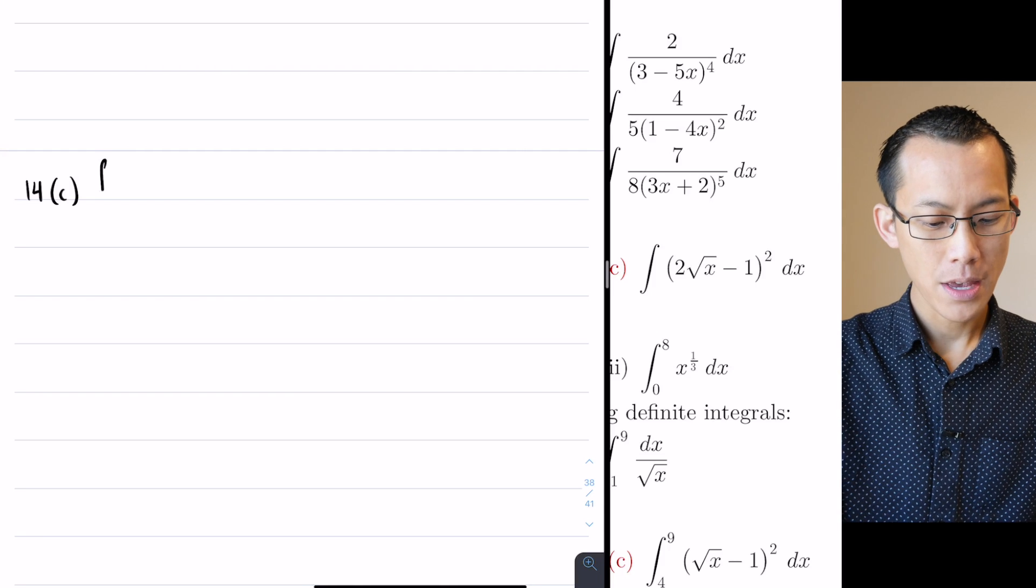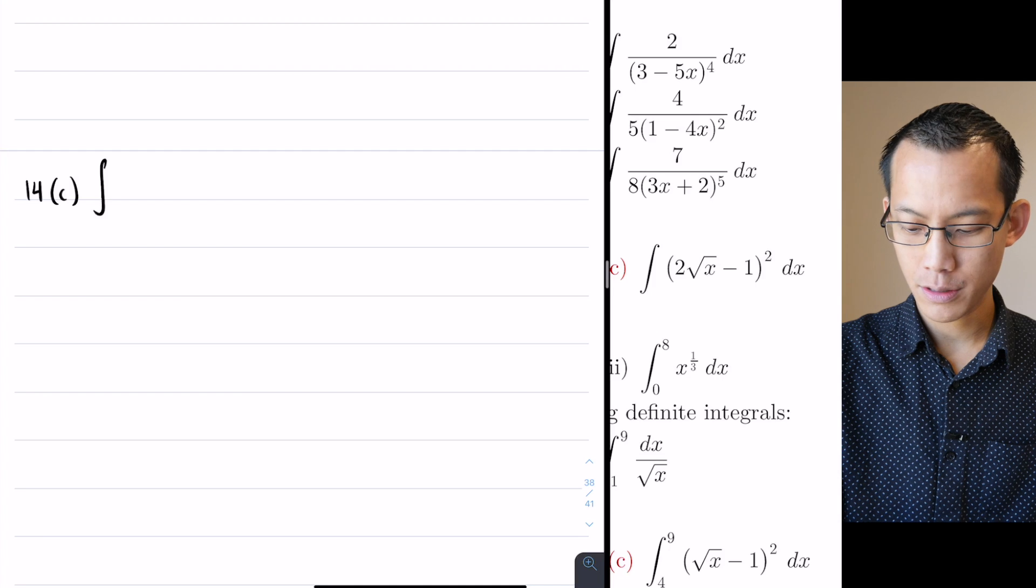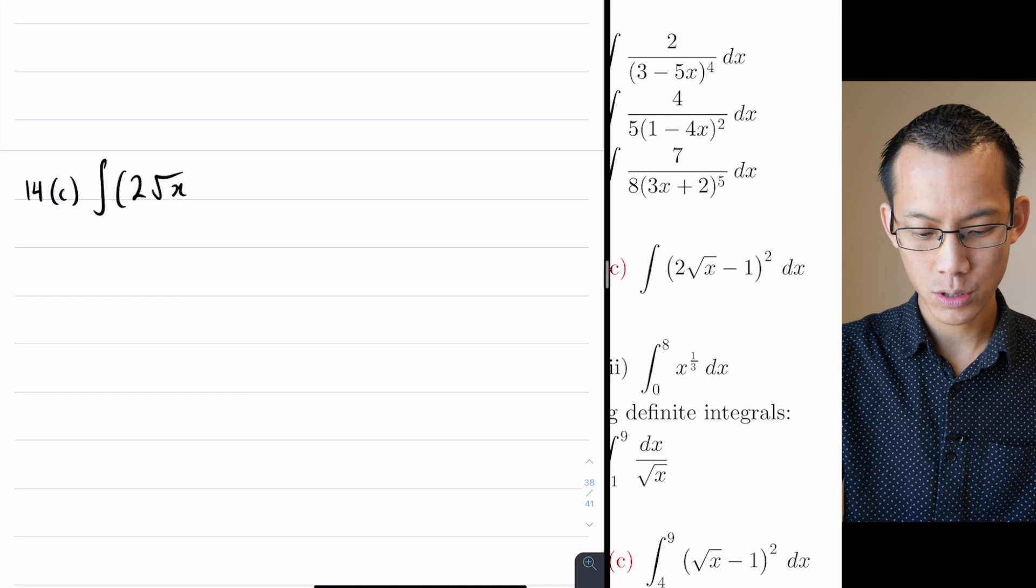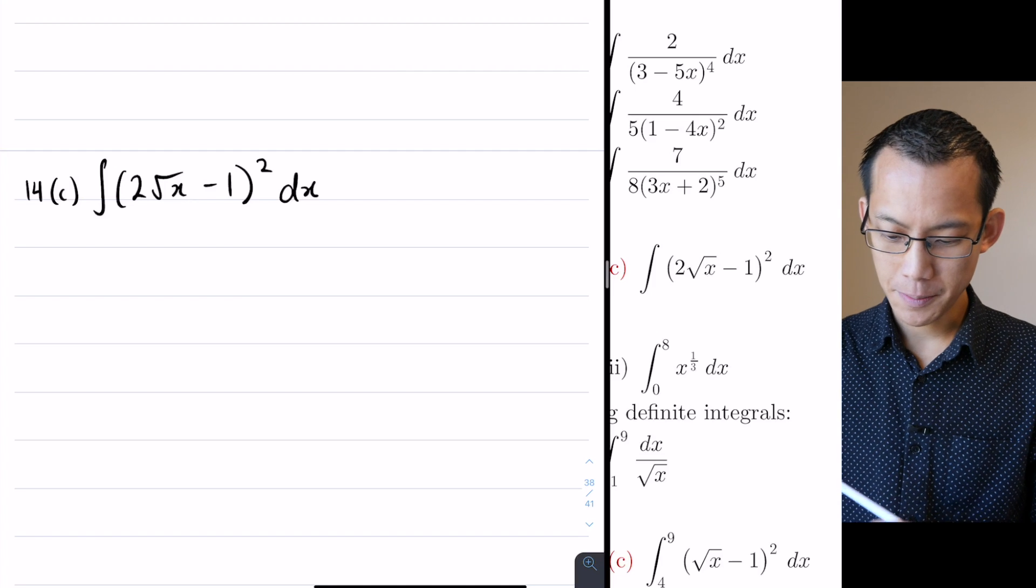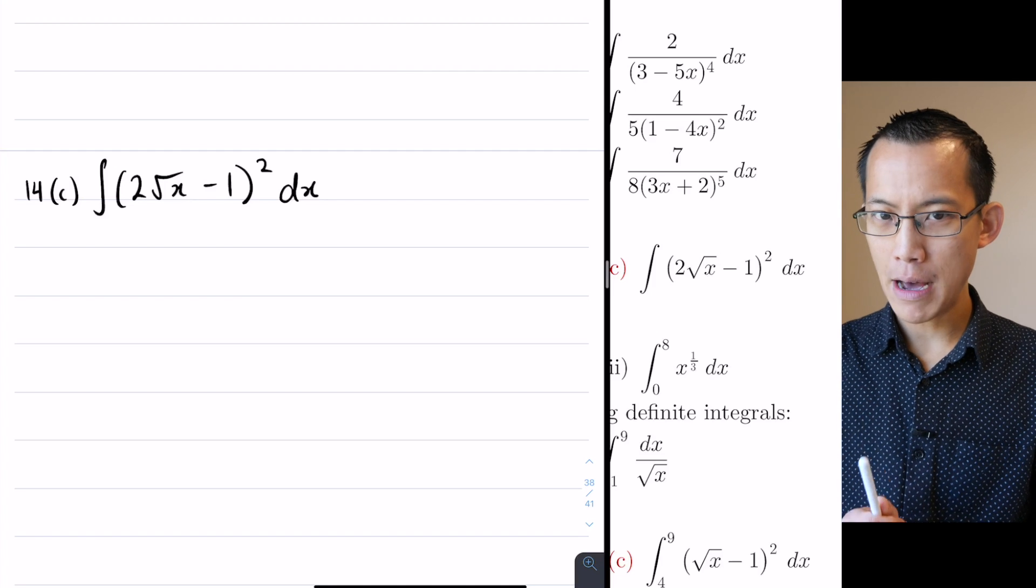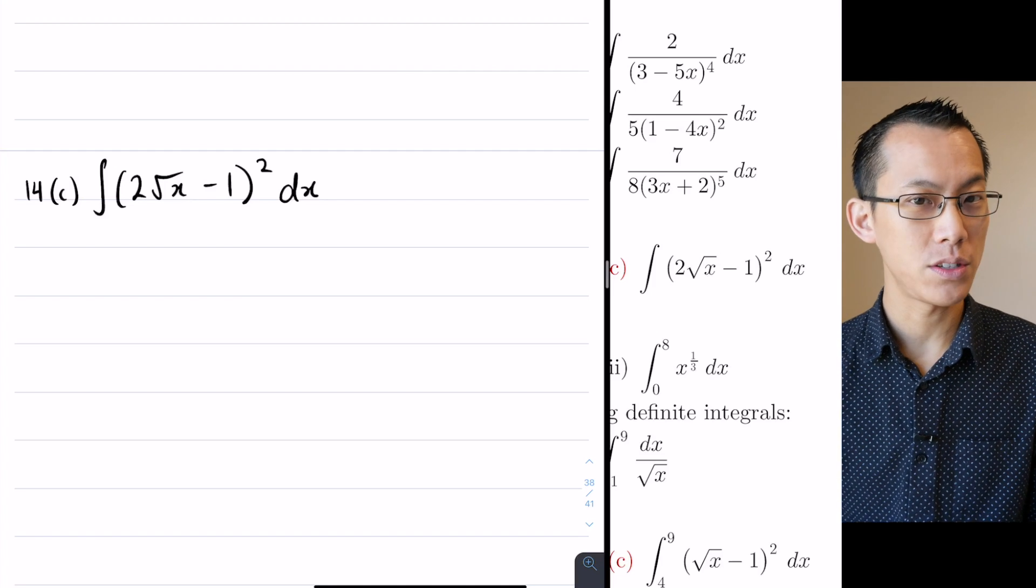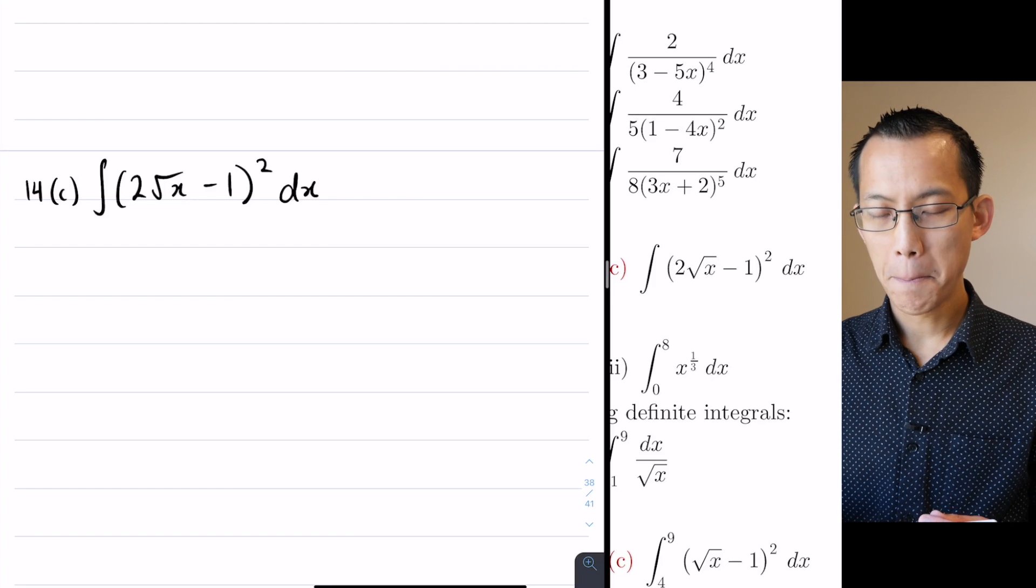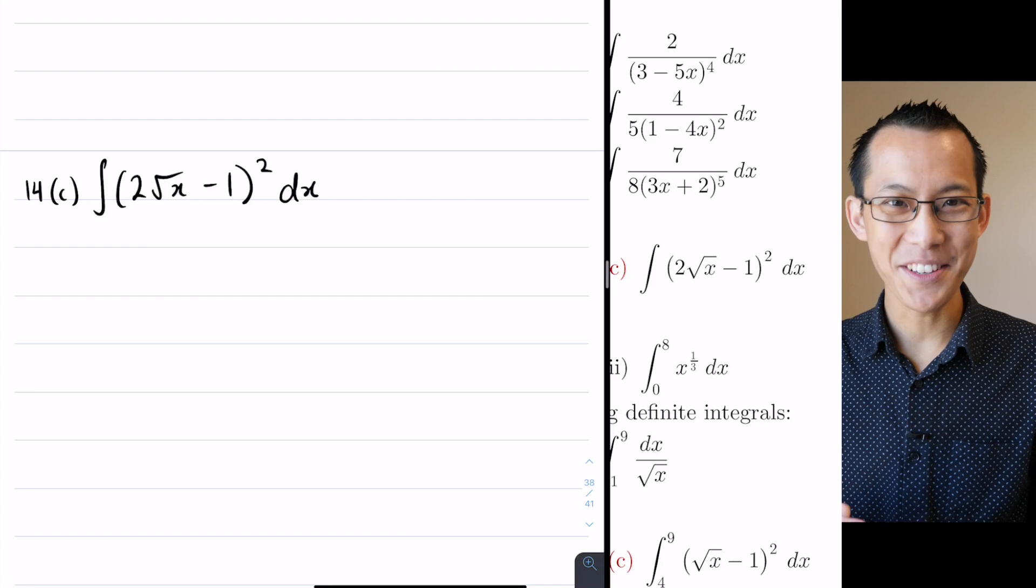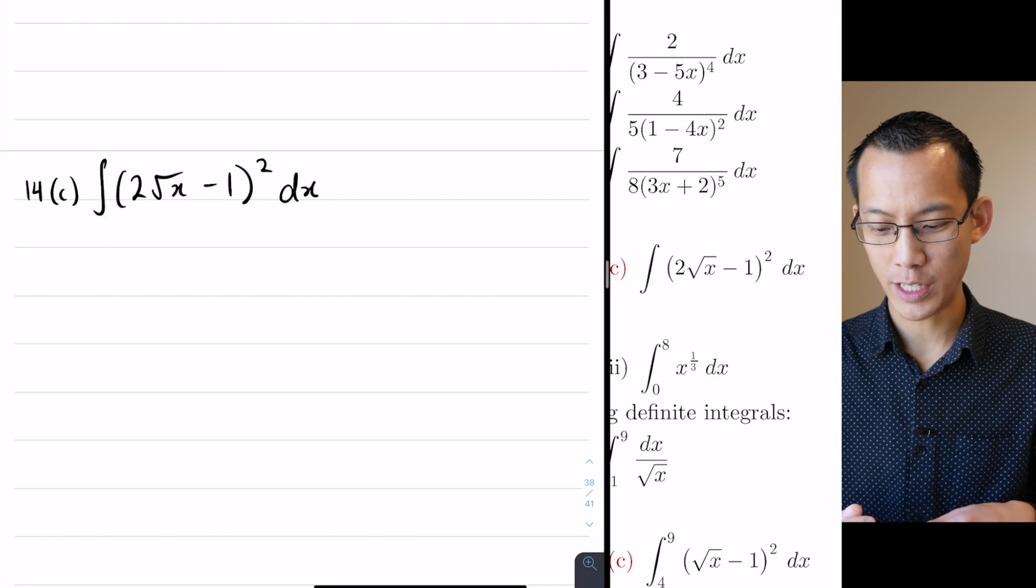So let's write down the question first. I'm looking at part C right on the end there. It's 2 root x take away 1 squared, and that's what I'm integrating with respect to x. Now when you have a look at this, you might be tempted to think, this is one of those questions where I can choose: should I expand or should I use reverse chain rule? But it's not. There's a reason why the question has encouraged you to expand.